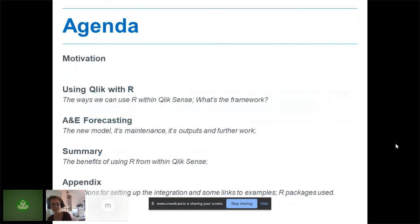Then I'll go on to the fun part, which is the actual A&E forecasting model, and a bit about that model and how we maintained it and the outputs from that model and a bit of further work. And just give a summary. And at the bottom I've got an appendix, so this is what I'm not going to talk about. I'm not going to talk about the intricacies involved in getting R and Qlik Sense to be integrated, because I didn't think that'd be a very interesting talk. But I've put some links in there for you so you can get access to the exact instructions that I followed to implement it.